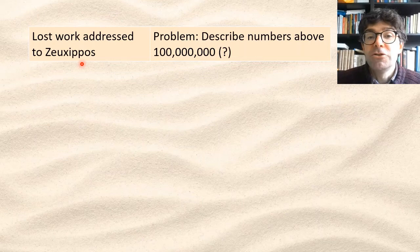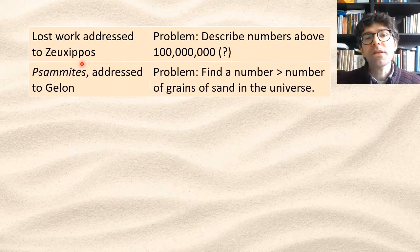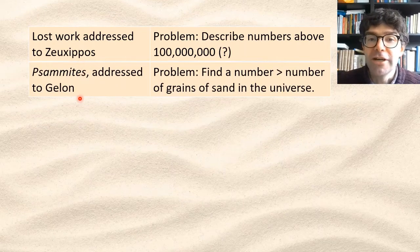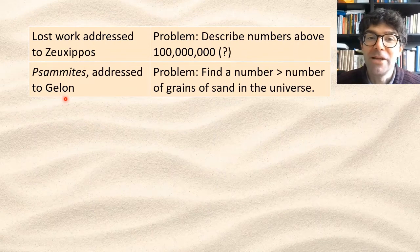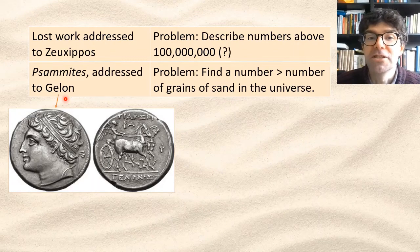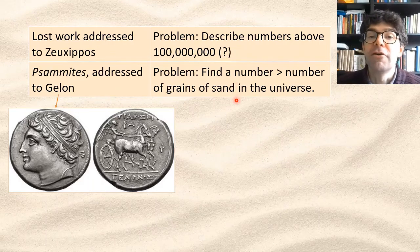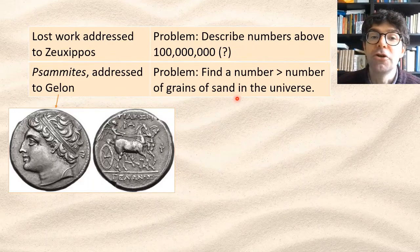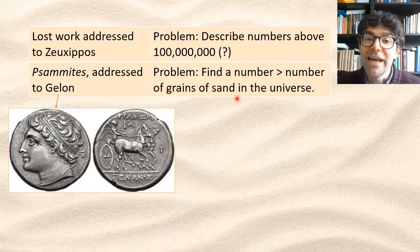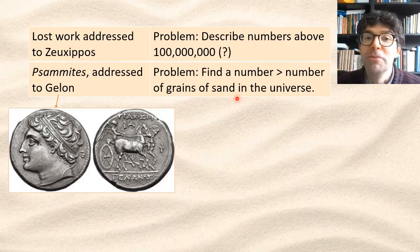If you then contrast the surviving work, the Psammites, Archimedes is trying to catch the interest of one of his patrons, Galen, who was the regent of Syracuse at the time. And the way he demonstrates the power of his new number system is by relating it to the proverbial idea that there are far too many grains of sand for a human to count. So it's a really engaging way to convey the value of this mathematical idea of a new number system.